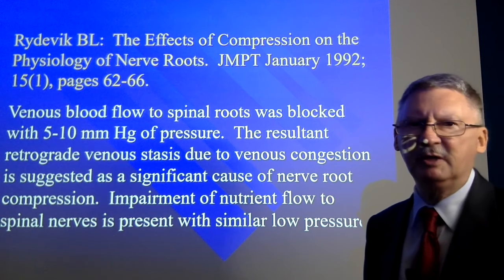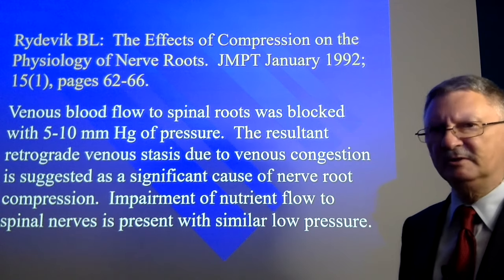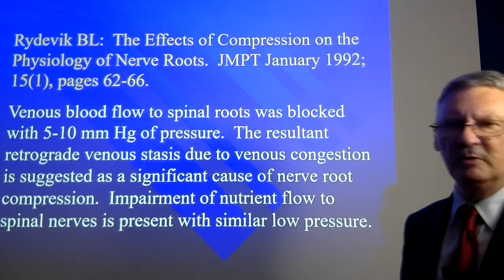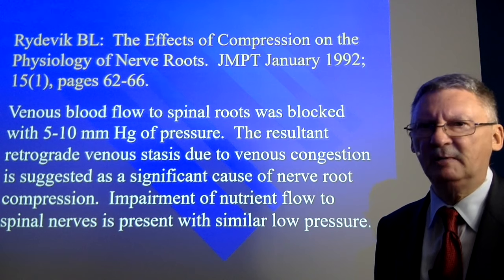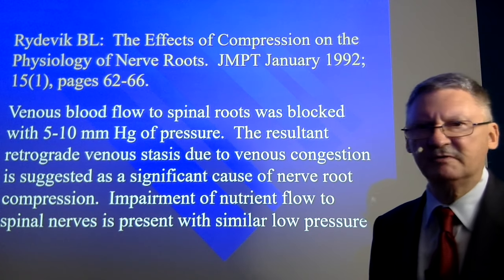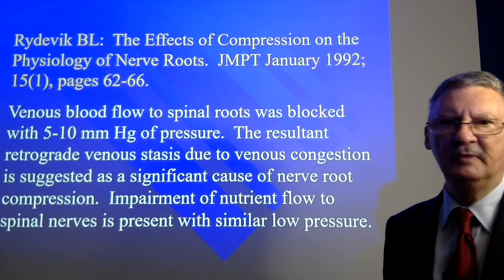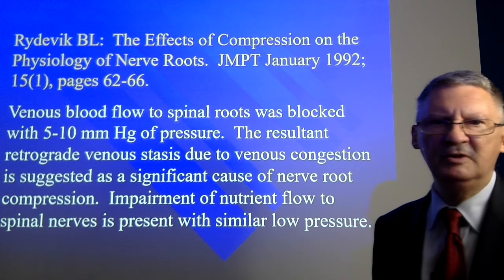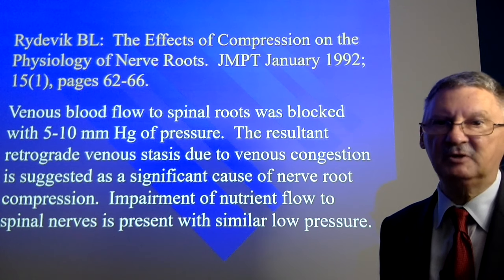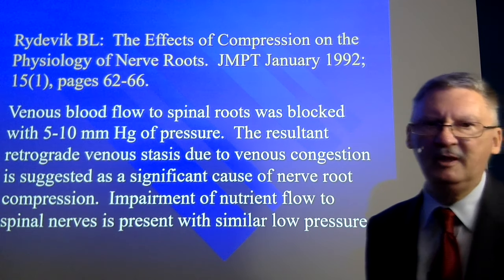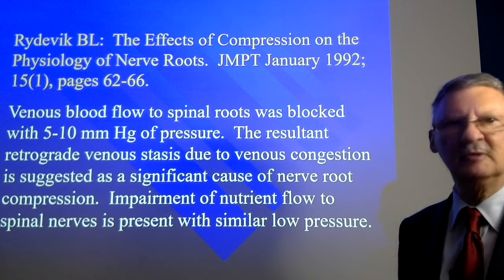Reitavik noted that venous blood flow to spinal nerve roots was blocked with as little as 5 to 10 millimeters of mercury pressure, indicating that venous drainage can be compromised at even lower levels of compression than those described by Sharpless and Kano. Reitavik's team noted that the resultant retrograde venous stasis is a significant cause of nerve root compression, and that impairment to nutrient flow is present at similar low pressures.